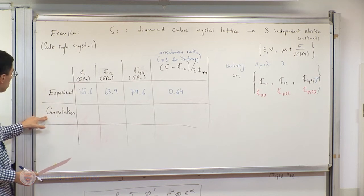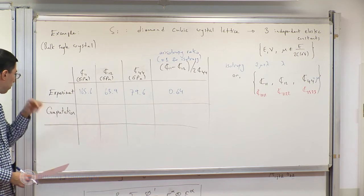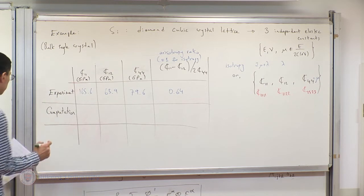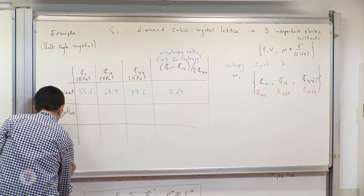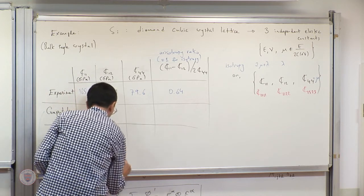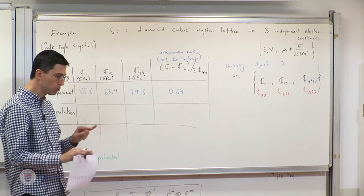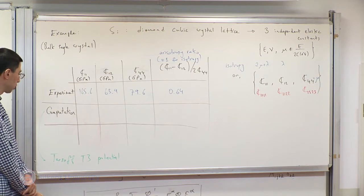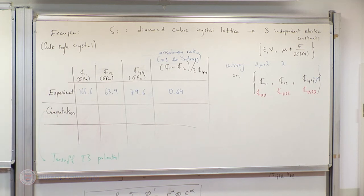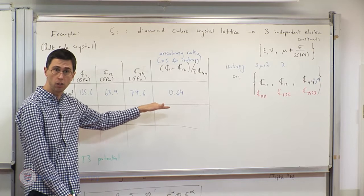The computation is based on the Cauchy-Born hypothesis invoking some potential. However, the potential used in this particular example is not the Lennard-Jones potential. It's called the Tersoff T3 potential. It's not really a pair potential per se either — it looks into more than pairs, considering pairs of pairs as well, to figure out the interaction potential.